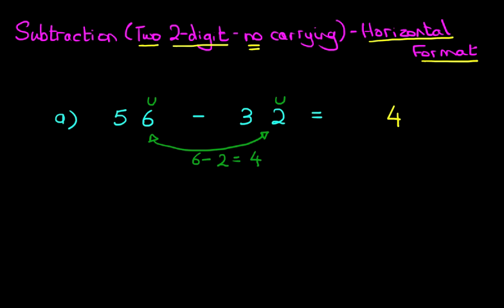And now we are going to do the tens. So we have got 5 tens minus 3 tens. Let's draw the arrow across just to highlight what we are doing. So we have 5 minus 3. 5 minus 3 is 2.